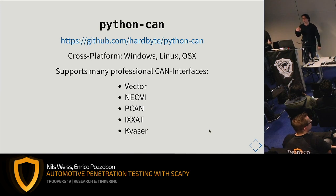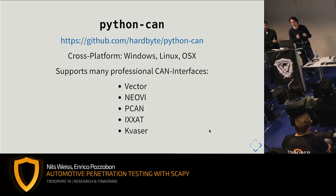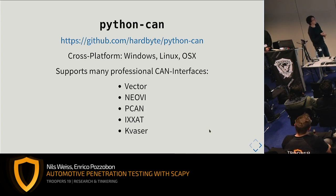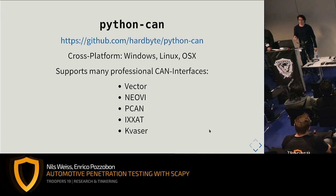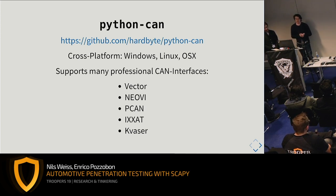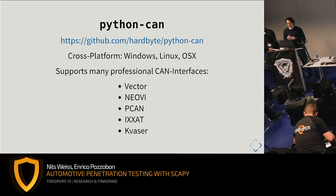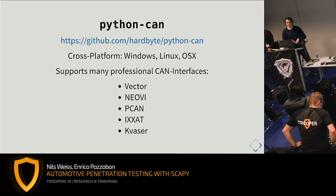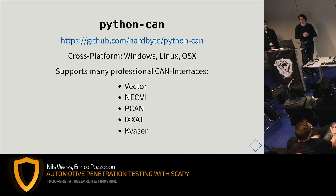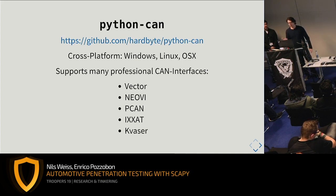We also have Python-CAN inside Scapy. We use Python-CAN as a lower layer, especially for cross-platform support — Windows, Linux, and OSX. If you are a car manufacturer, you probably already bought expensive tools from Vector, NeoVI, PCAN, IXXAT, or Kvaser. These are commercial solutions for CAN media access devices that are usually pretty expensive, and Vector for example is only supported on Windows. Therefore we use Python-CAN as a wrapper to support all these interfaces inside Scapy.